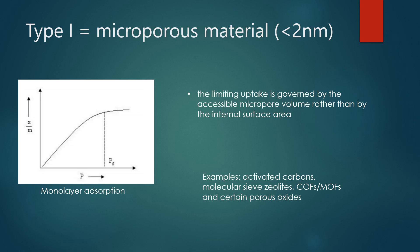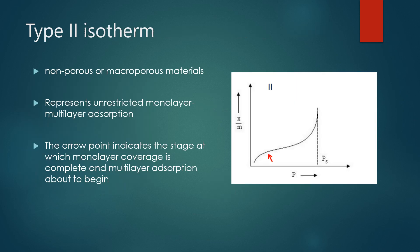Let's delve into those most common types of isotherms. This Type 1 plot you see here is pretty basic looking - it's a microporous material, so less than two nanometers of pore size. Right where that vertical line on the plot is, it's starting to equilibrate. The limiting uptake is governed by the accessible micropore volume rather than by any internal surface area. Some normal examples of this would be activated carbons or zeolites, which we see pretty commonly.